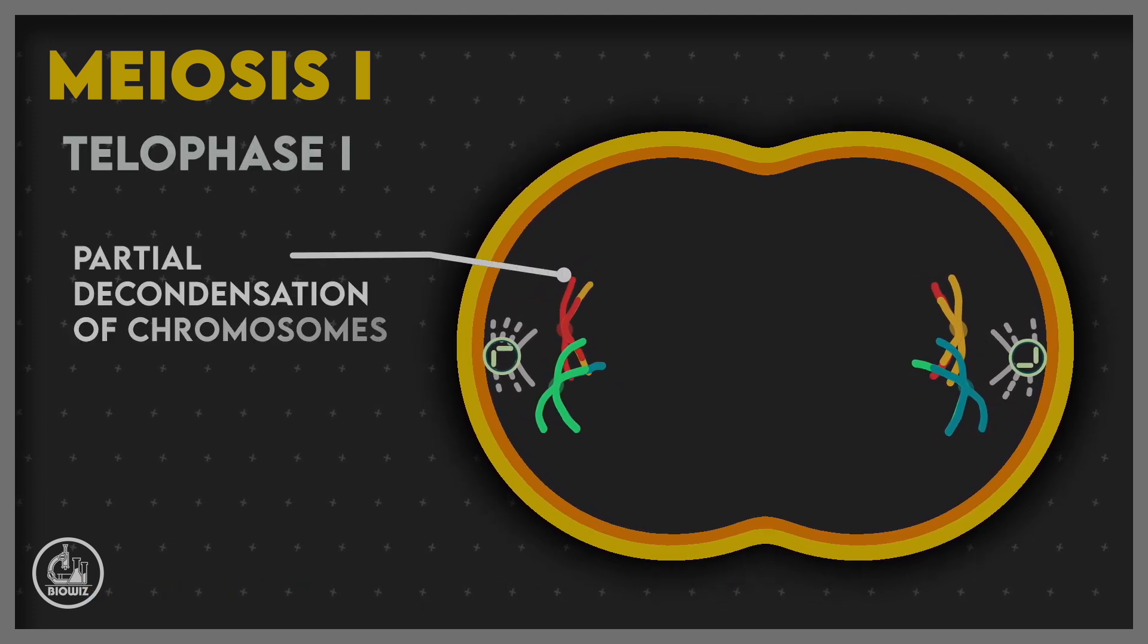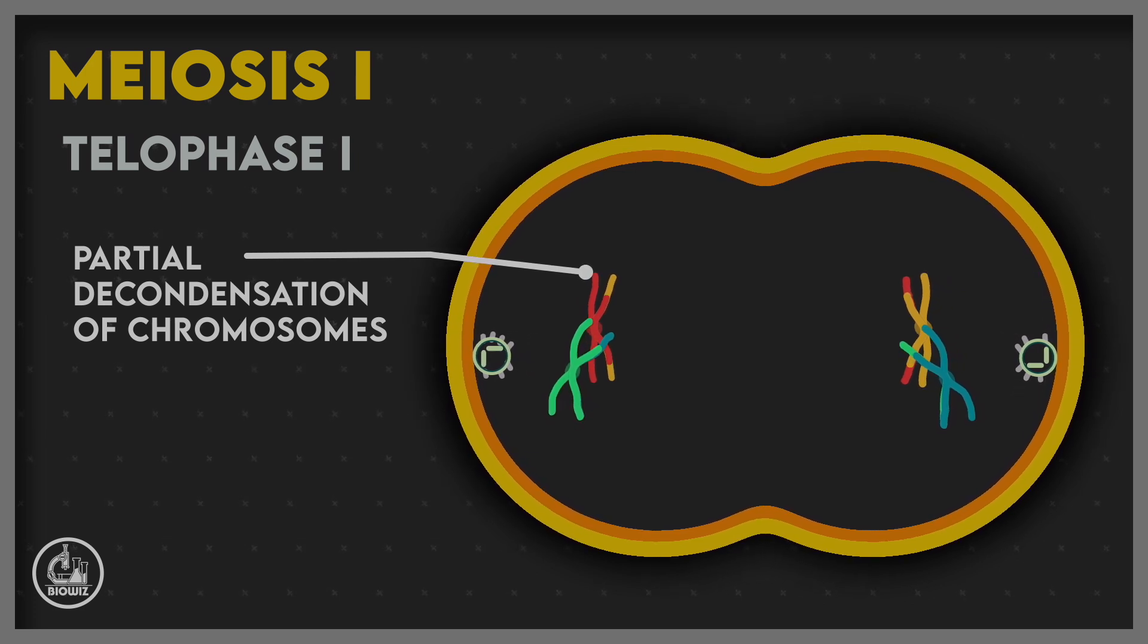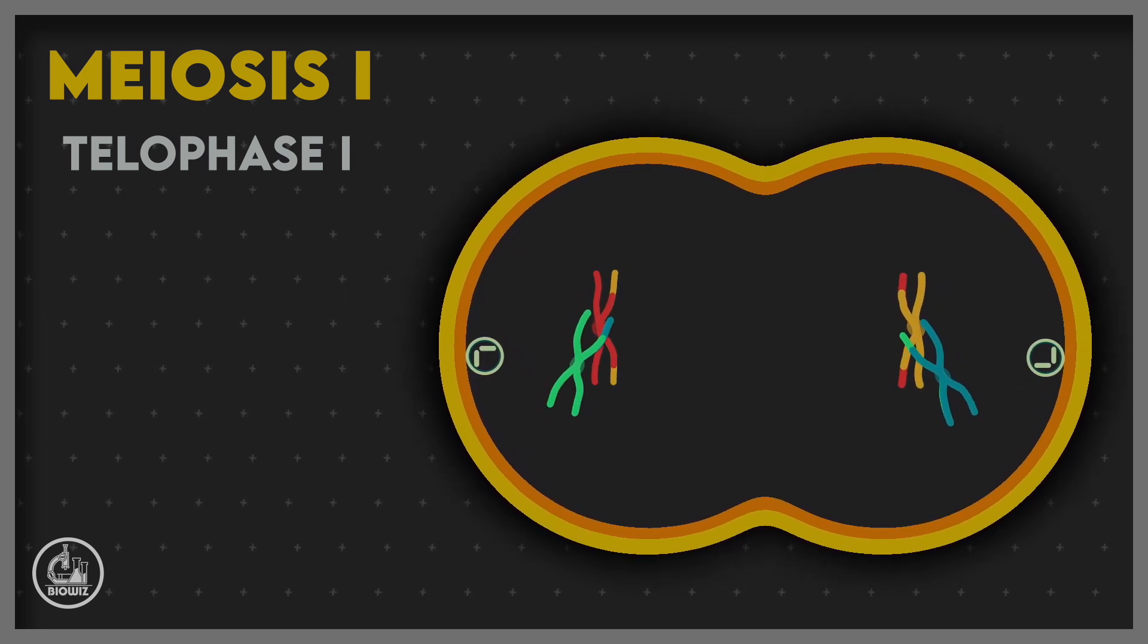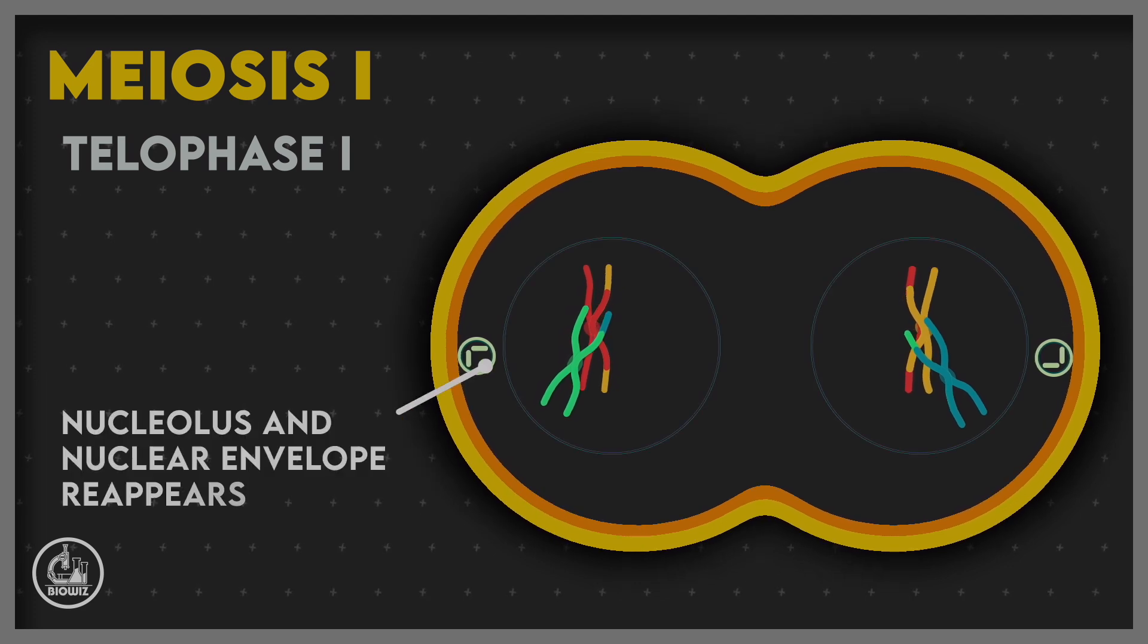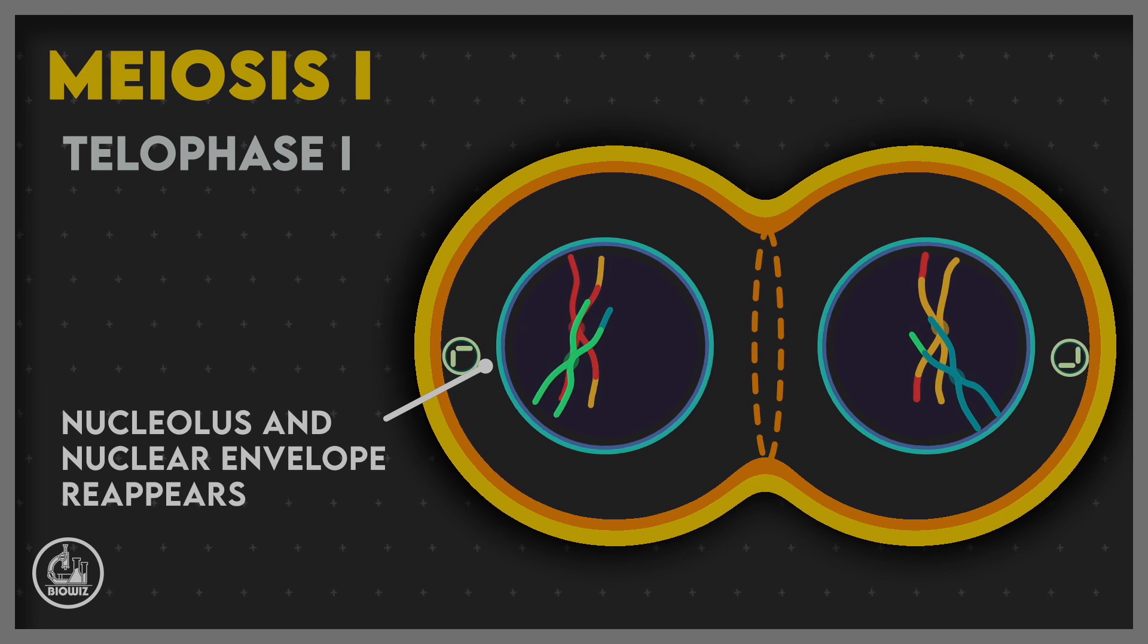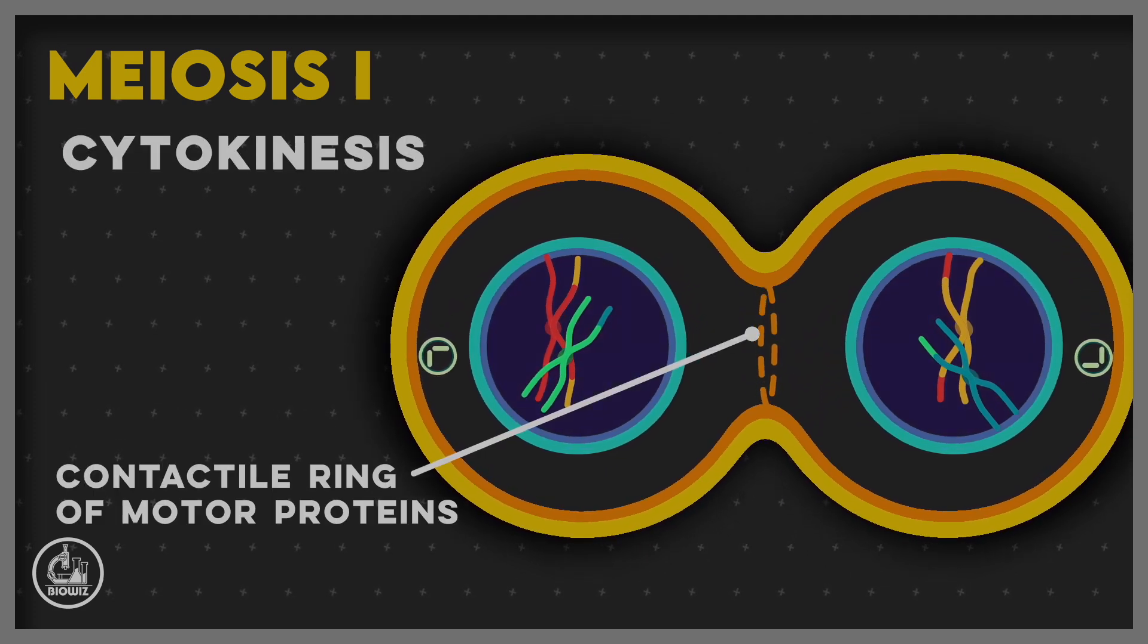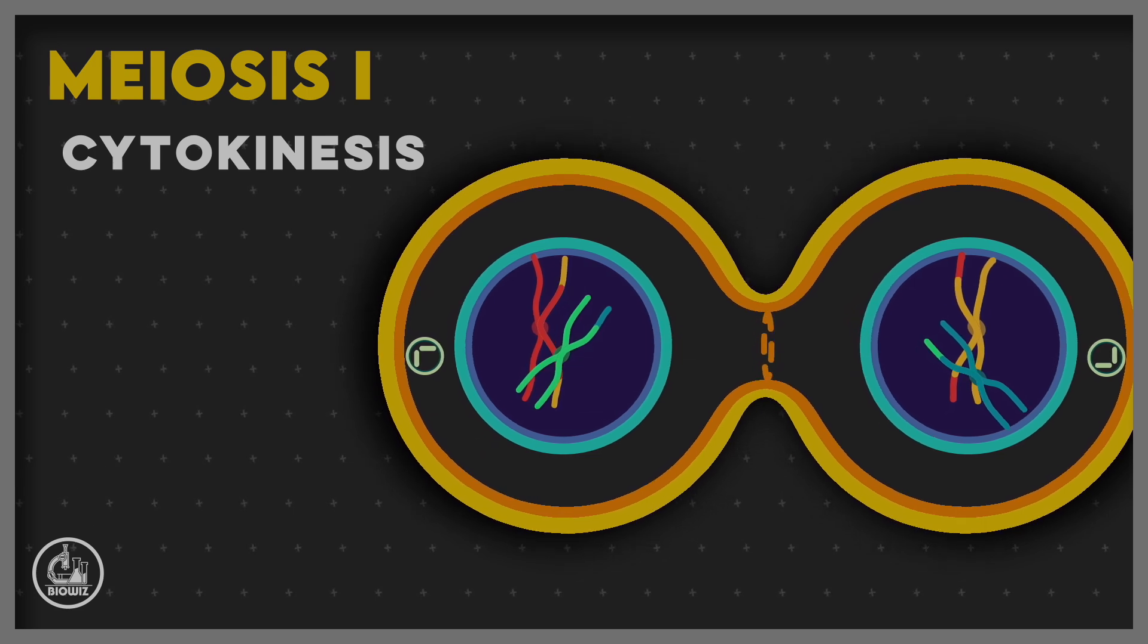The last phase is telophase I, in which the chromosomes undergo partial decondensation. The nuclear envelope assembles at each pole, completing karyokinesis. Cytokinesis results in formation of two haploid cells having half the number of chromosomes, but each chromosome contains two chromatids.